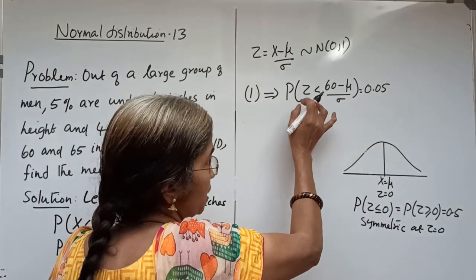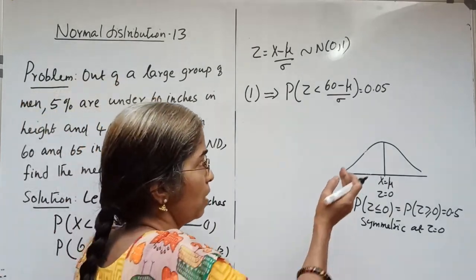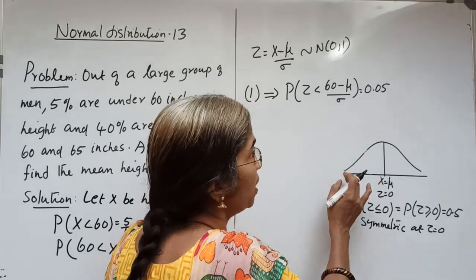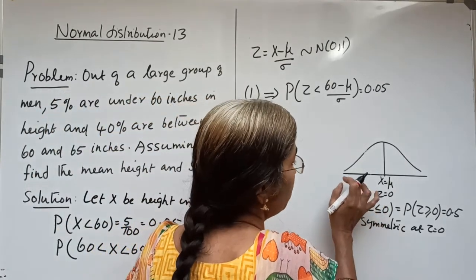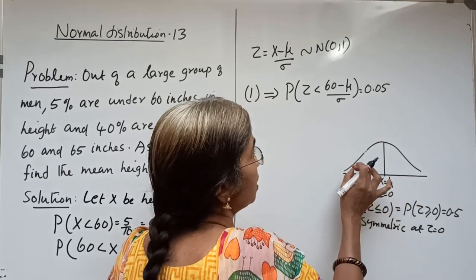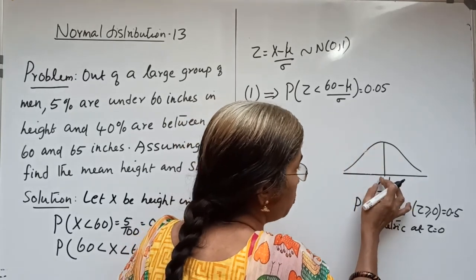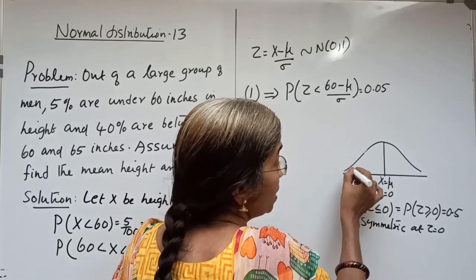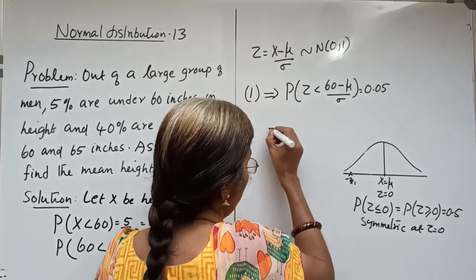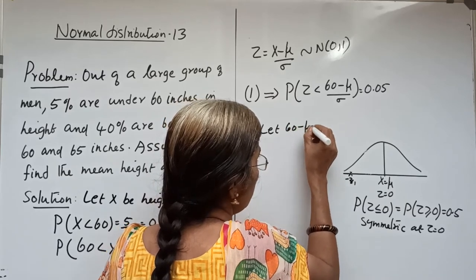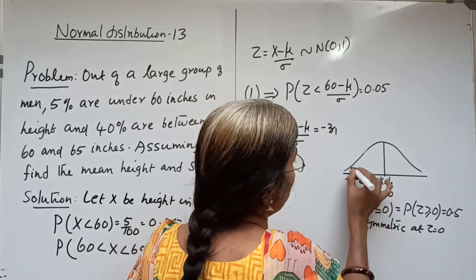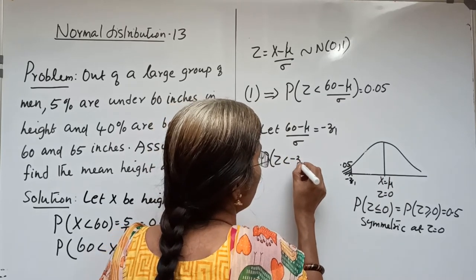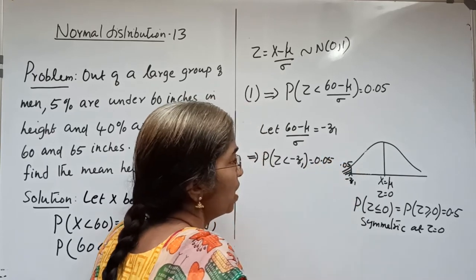The area condition is: probability z less than 60 minus μ by σ equals 0.05. That is, from minus infinity up to a particular point, the probability is 0.05. But we know from minus infinity to 0 it is 0.5, so this area is on the left tail. Let us take it as minus z1, that is 60 minus μ by σ equals minus z1, so that probability z less than minus z1 equals 0.05.